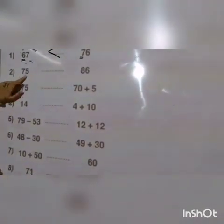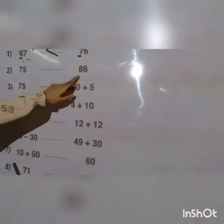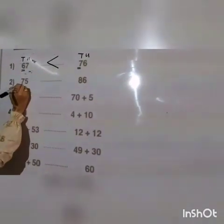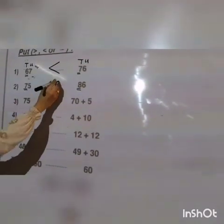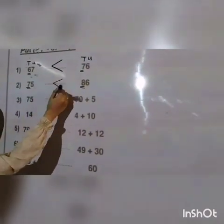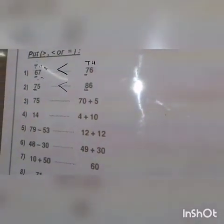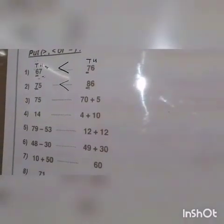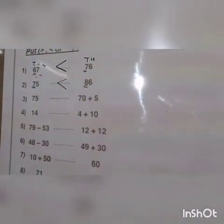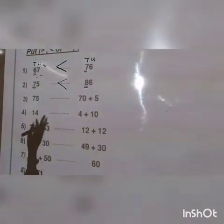Number two: seventy-six and eighty-six. Look at the tens — seven is less than eight. So seventy-five is less than eighty-six.